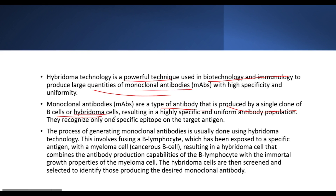Monoclonal antibodies are produced by a single clone of B-cells or hybridoma cells. The main property is that they are highly specific — they recognize only one specific epitope on the target antigen.